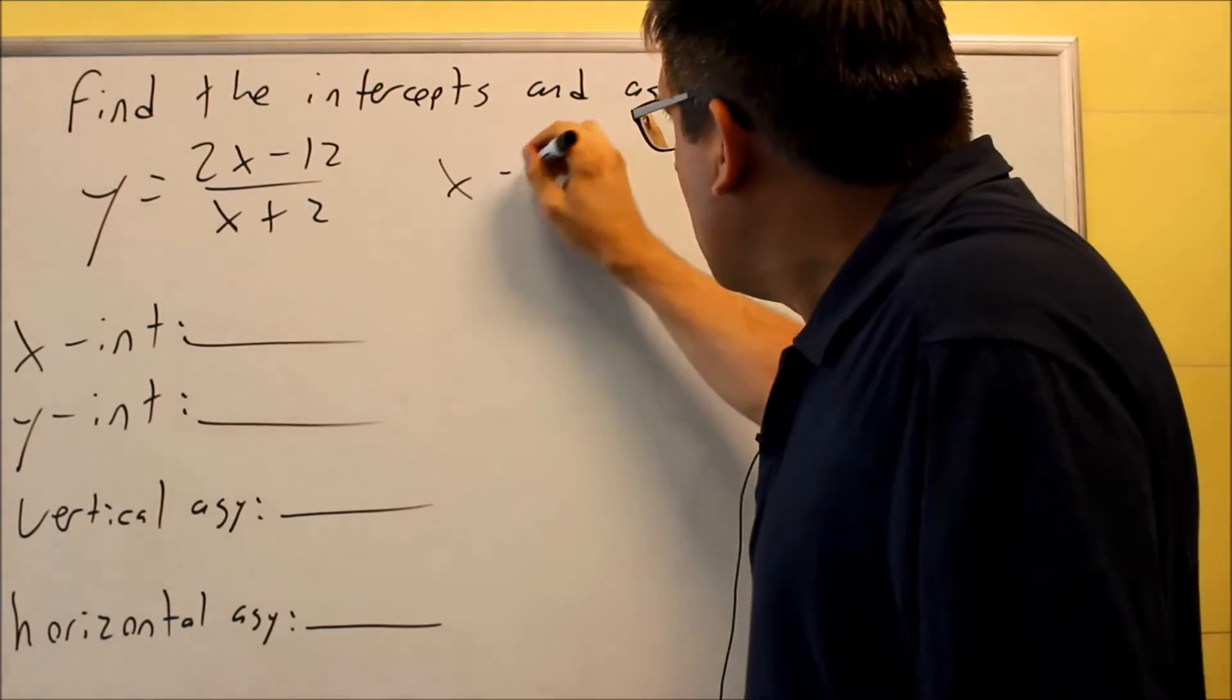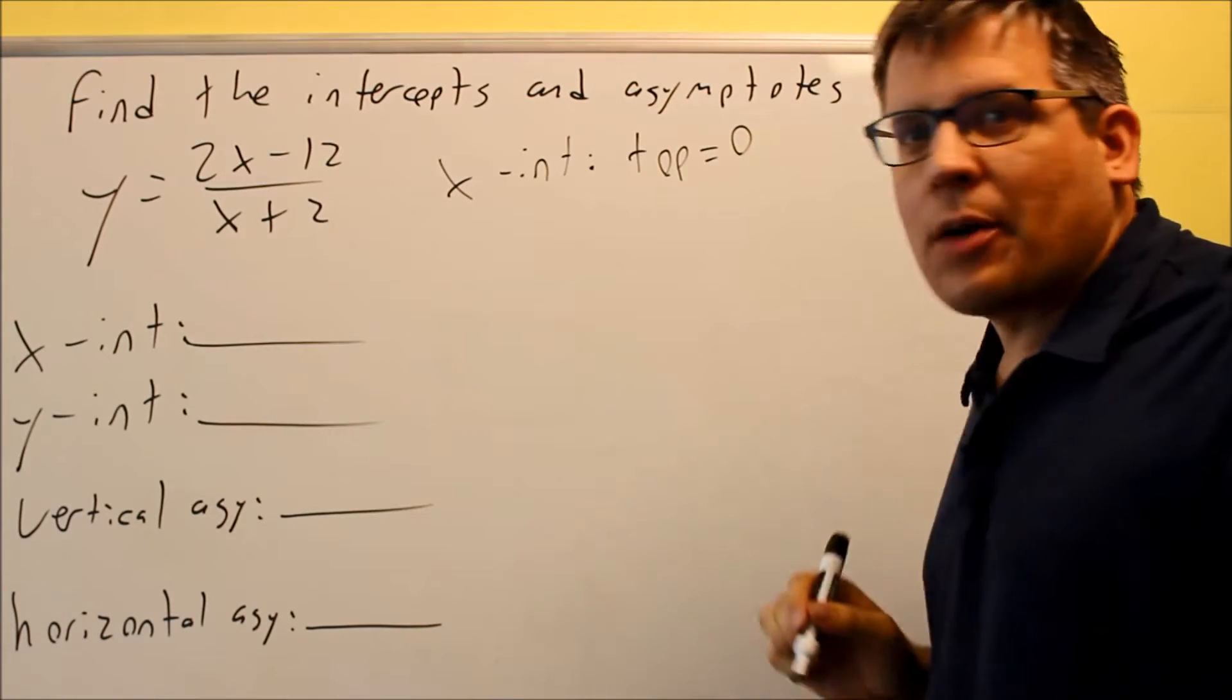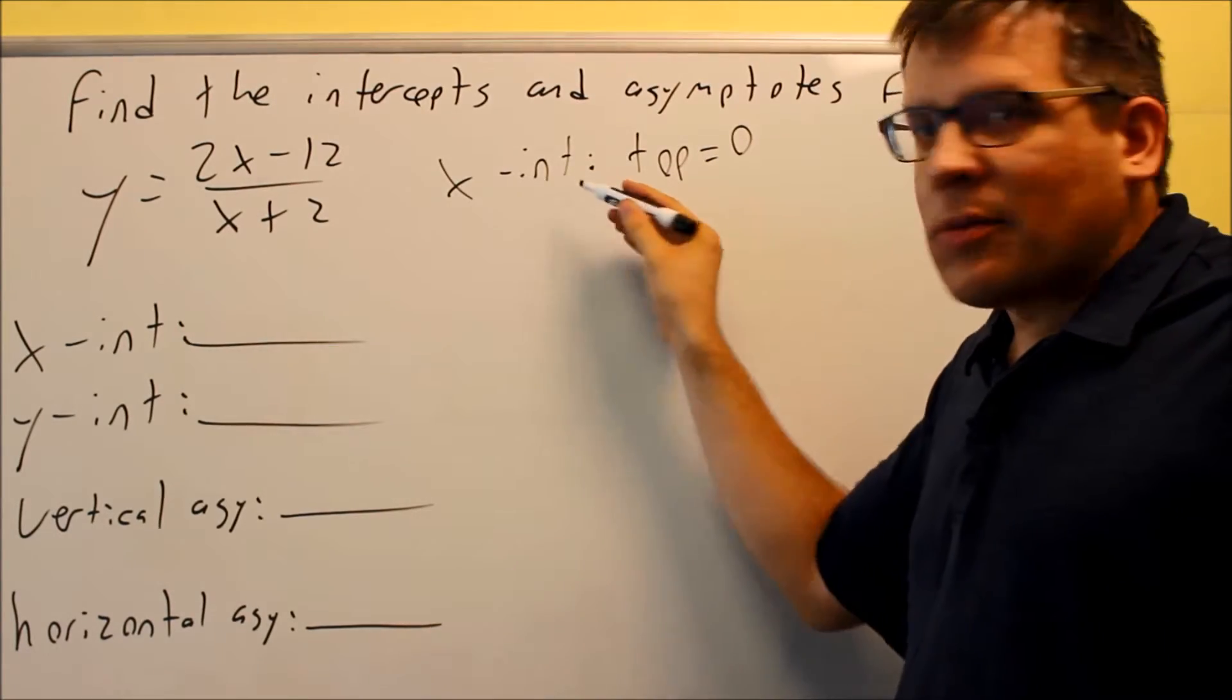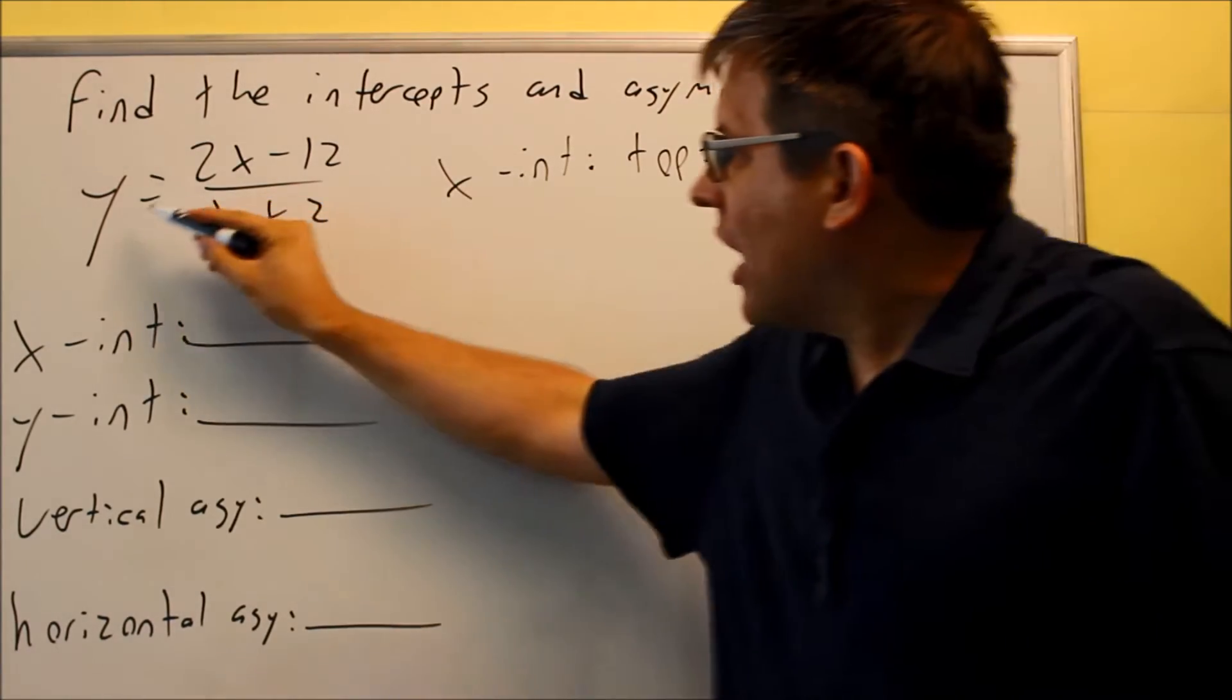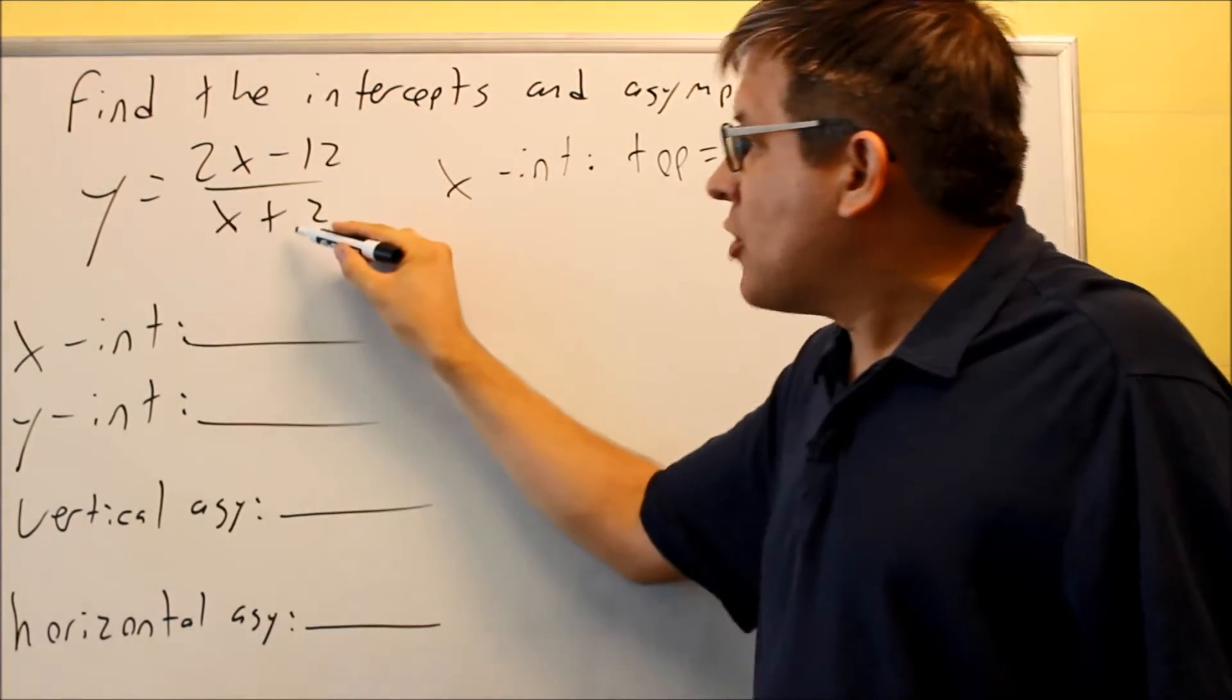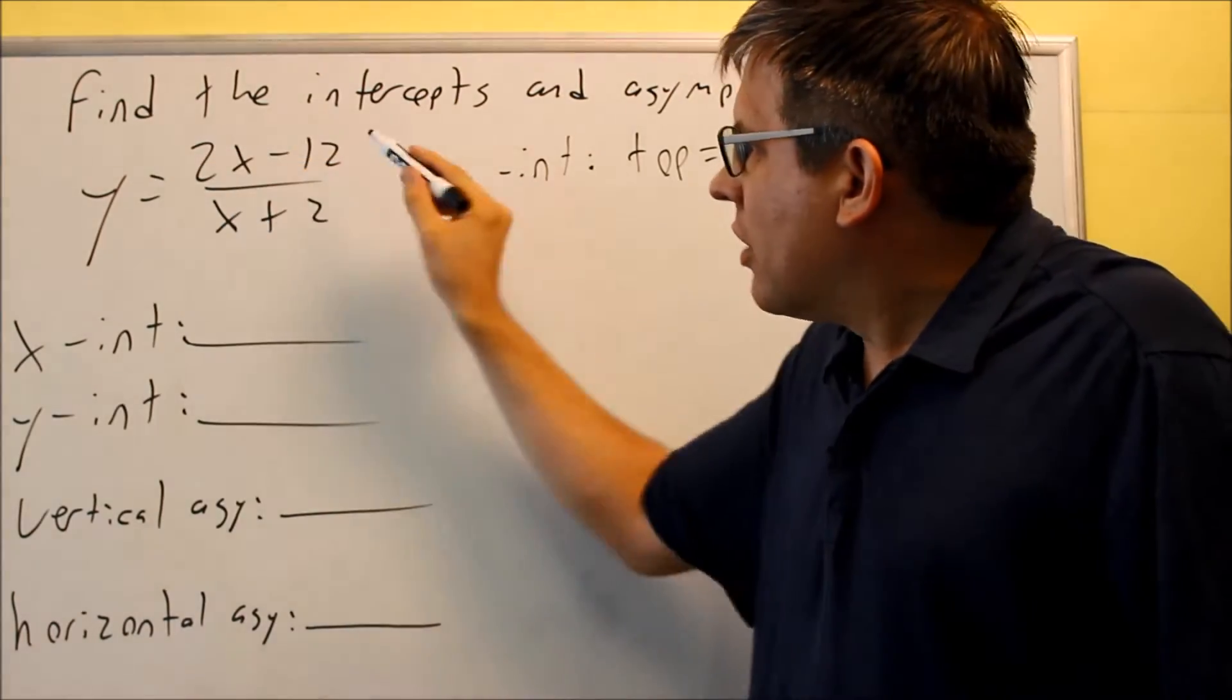The rule for finding that is that you want to take the top, and you're going to set the top equal to 0. Now, normally, x-intercept is where the y equals 0, so if you have a 0 in there for y and you were to cross-multiply or multiply both sides by x plus 2, you'd end up just having a 0 equal the top.